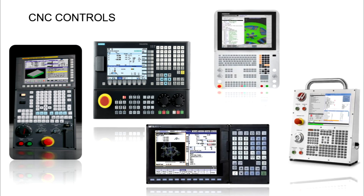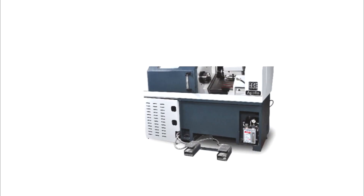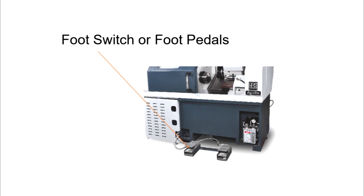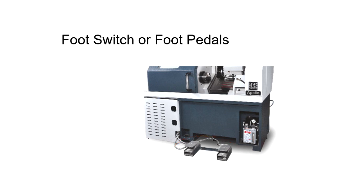Finally, we move to the last part: foot switches. This is located below the operator side. The operator can quickly activate and deactivate the workpiece holding and work supporting using these foot pedals. Generally, the left one is used for clamping and declamping of the chuck, and the other one is used for clamping and declamping of the tailstock.